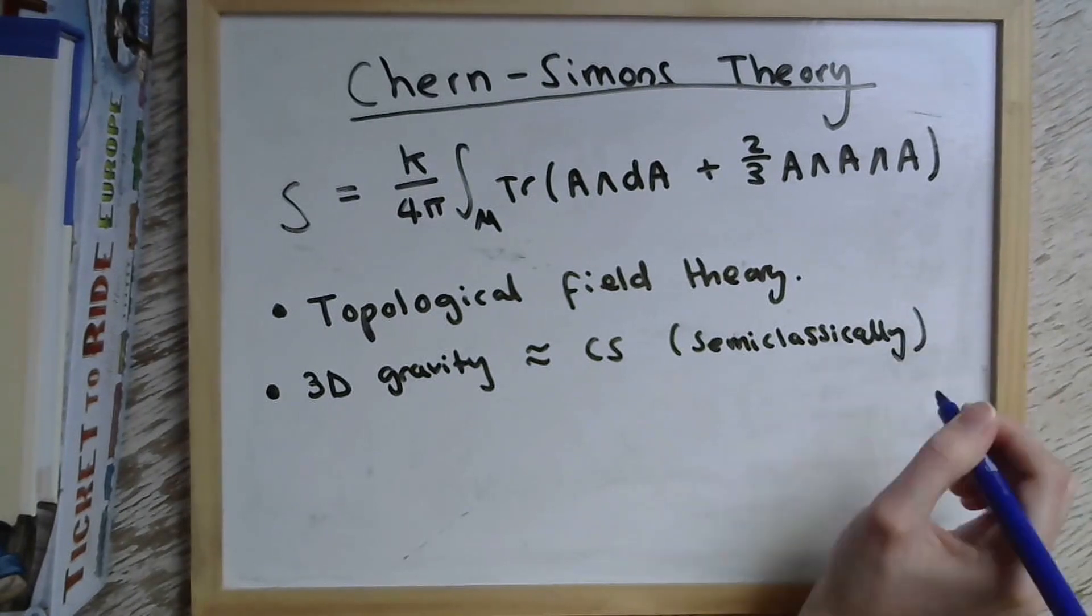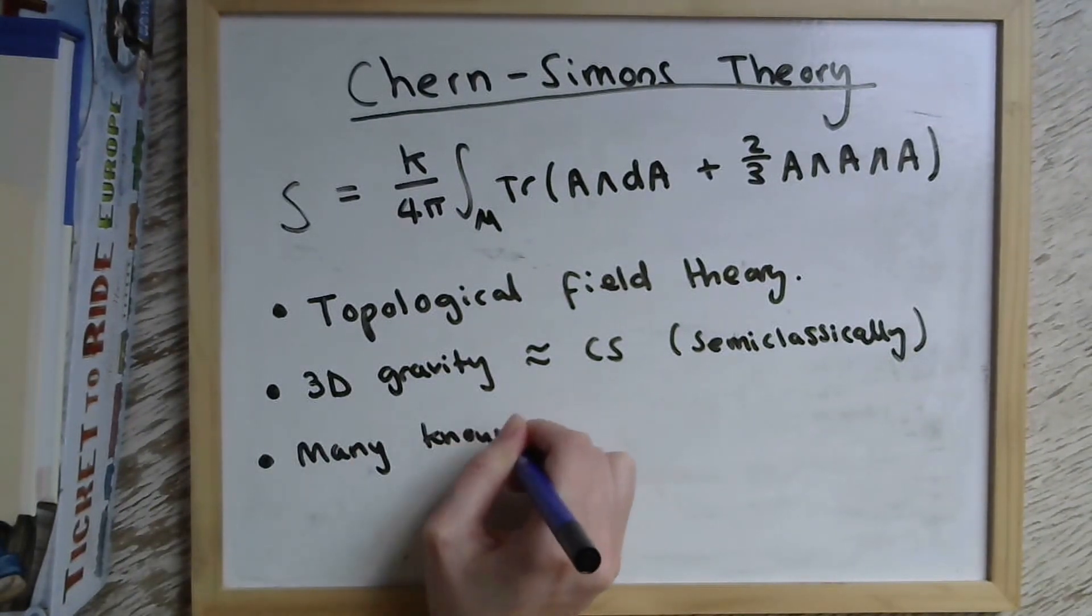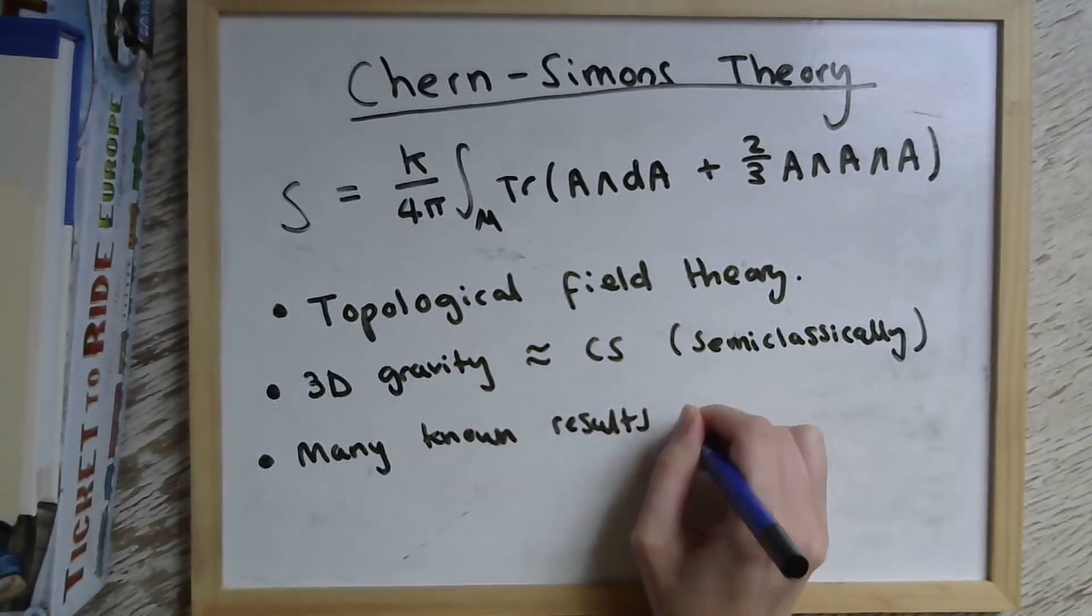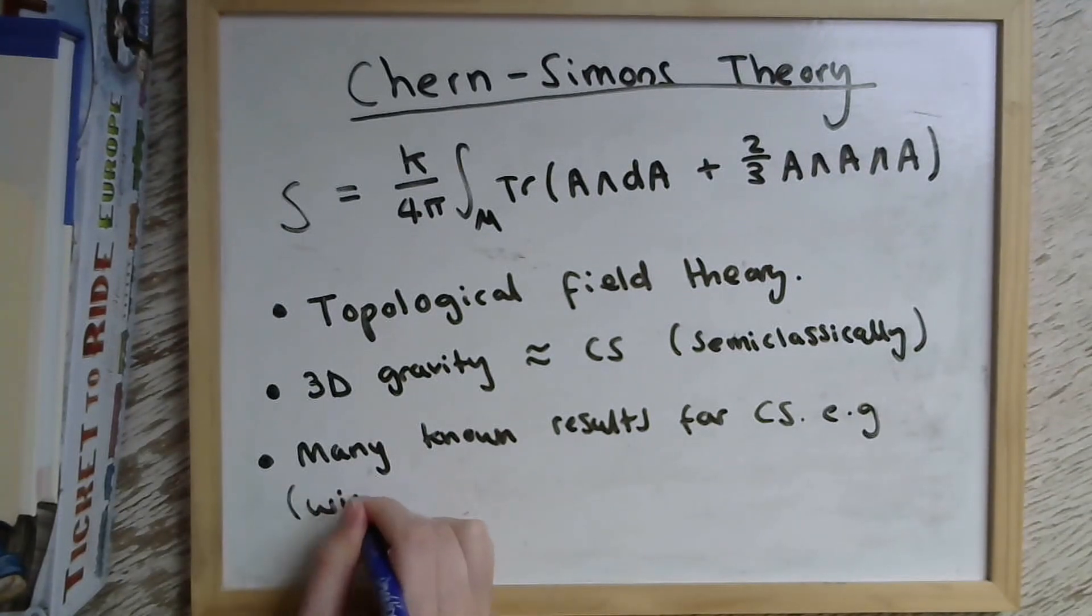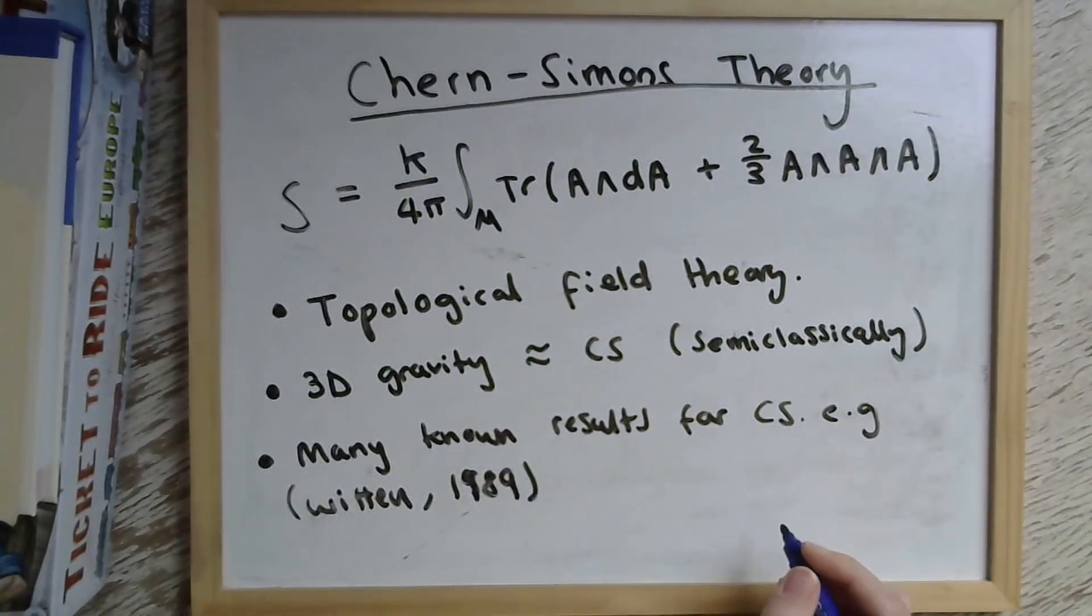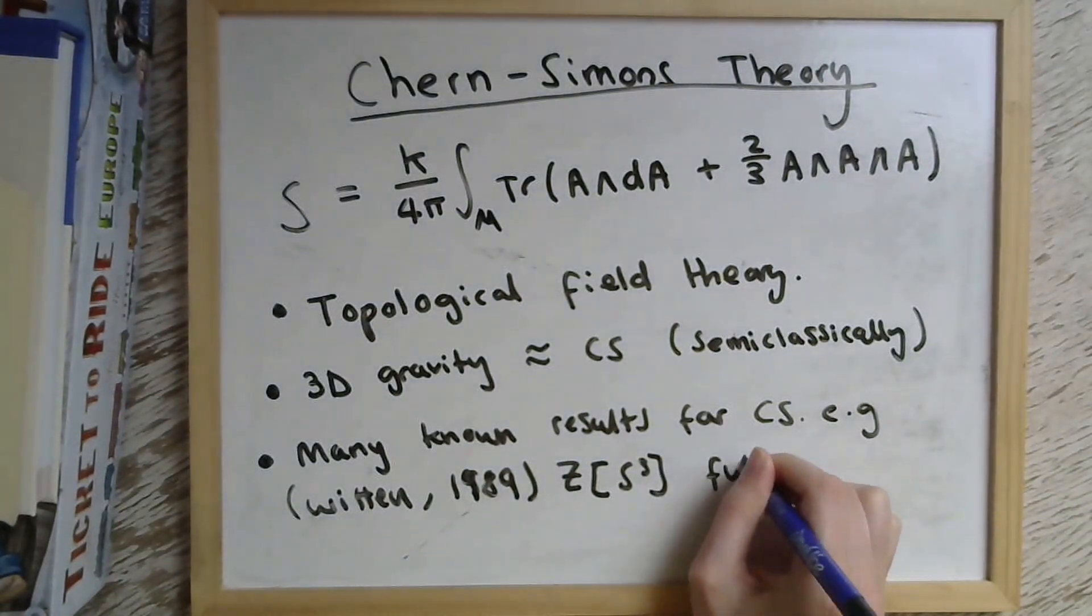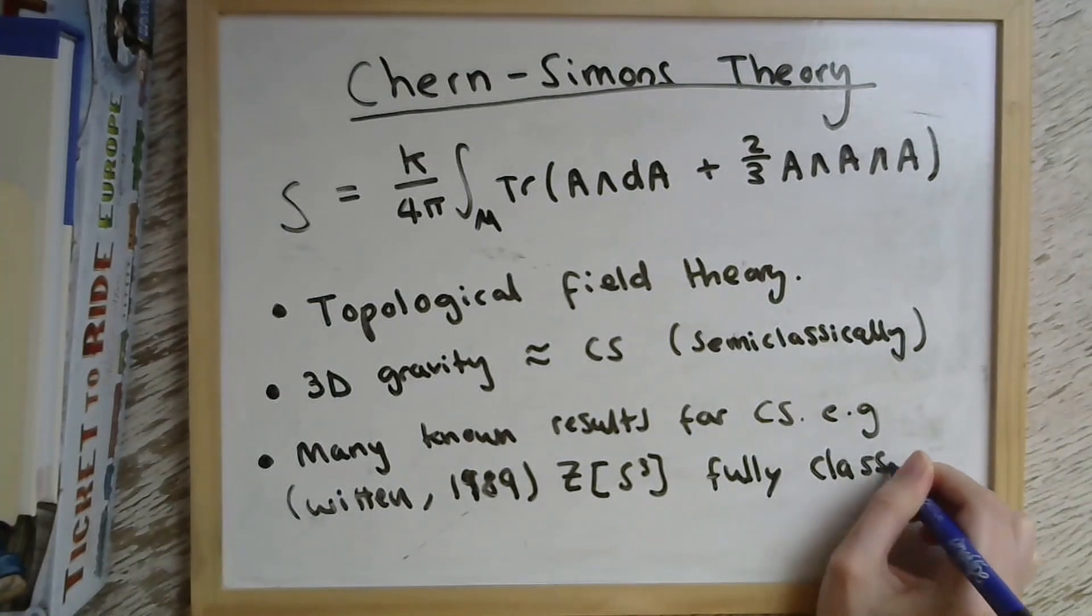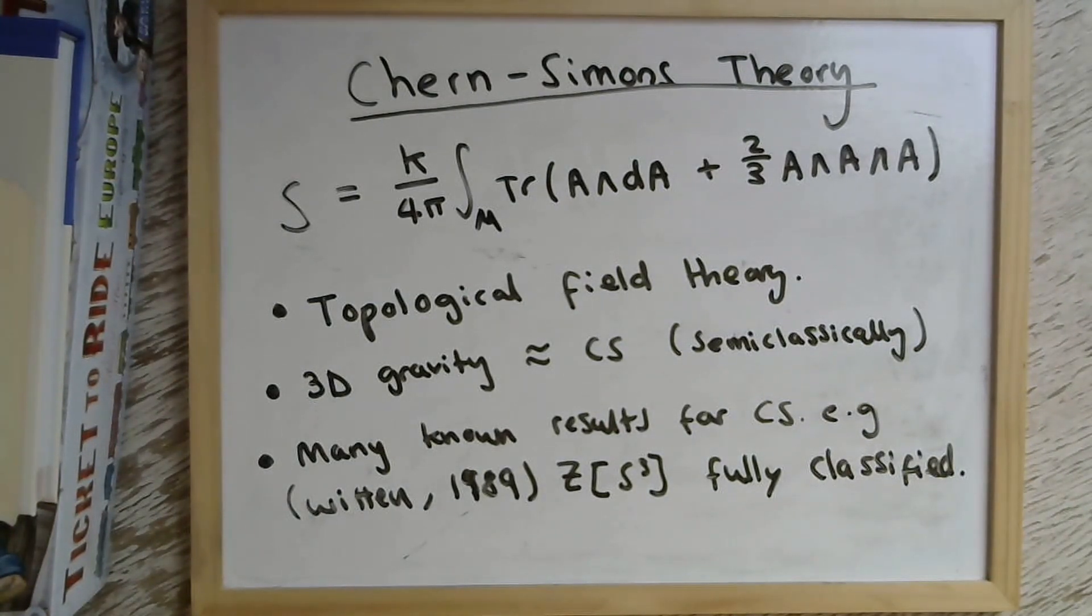And lastly, there are already many known results for Chern-Simons theory on compact manifolds, such as some very important results by Witten in the 80s, which showed that the partition function for Chern-Simons theory on the three sphere could be fully classified for any choice of the gauge group. So this is nice for us because it means that, in a sense, half the work is already done. Our Euclidean de Sitter calculations can be covered by the three sphere partition function.